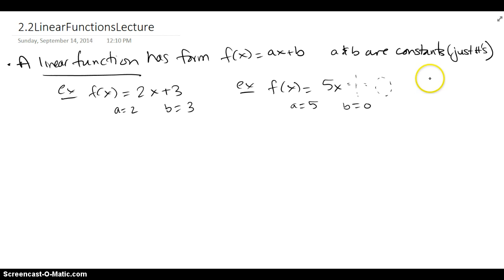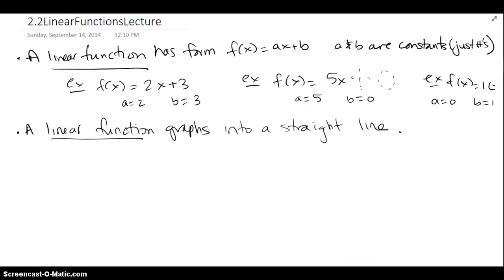Another example would be f of x equals, let's say, 10. In this case, we don't see an ax part, so a must be 0 and b is just the constant 10. So all three of those examples are linear functions.